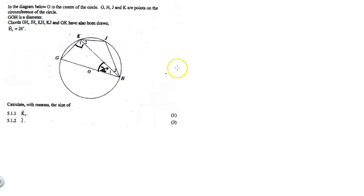They say that I must find K1. So my first answer for 5.1.1, which I've already solved, K1 equals 90 degrees, and my reason will be angle in semicircle.